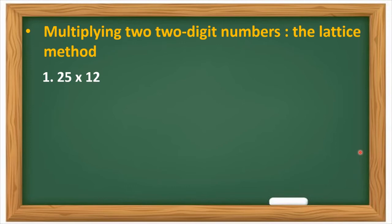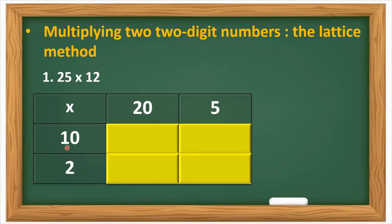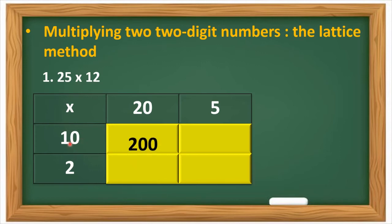Now we are going to make the table and solve using the lattice method. We are going to multiply 20 by 10. Students, if there is a 0 in the units place of both the numbers, then multiply the digits in their tens place and write 2 zeros after the product. So 2 ones are 2, and 2 zeros will come — that is 200. Next is 10 multiplied by 5: 5 zeros are 0 and 5 ones are 5. So the answer is 50.